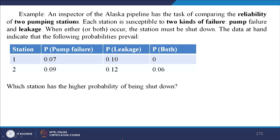Let us look at this example wherein you have been given two stations and an inspector of the pipeline has the task of comparing the reliability of these two pumping stations. Each station is susceptible to two kinds of failure: pump failure and leakage. So there are two ways in which the functioning of these two stations may be stopped. When either failure occurs, the station must be shut down. You have to find out the probability of shutting down of the station which has a higher probability of shutting down.